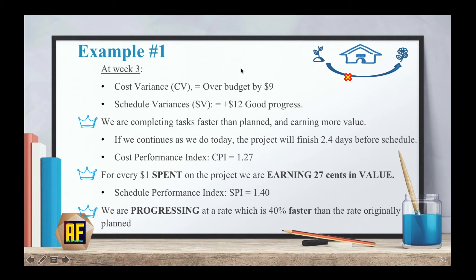Let's summarize what we got. Our cost variance was over budget by $9, which is great. Our schedule variance was plus $12, which means great progress — we are completing tasks faster than planned and earning more value. If we continue as we do today, the project will finish 2.4 days before schedule. We are earning 27 cents for every dollar spent and progressing at a rate 40% faster than originally planned. This project is fantastic.